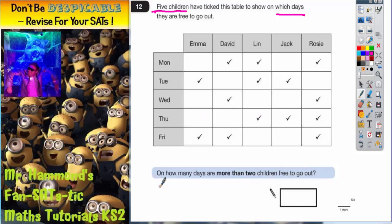So the first question we've got to deal with is on how many days are more than two children free to go out. Easiest thing to do here is go down the days and see how many children were free to go out. So on Monday there is one, two, three ticks. So Monday three children are free.